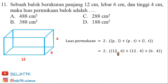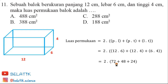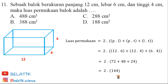Apabila kita hitung: 12 dikali 6 adalah 72, 12 kali 4 adalah 48, dan 6 dikali 4 adalah 24. Maka 72 ditambah 48 adalah 120, dan 120 ditambah 24 hasilnya adalah 144. Maka 2 dikalikan 144.